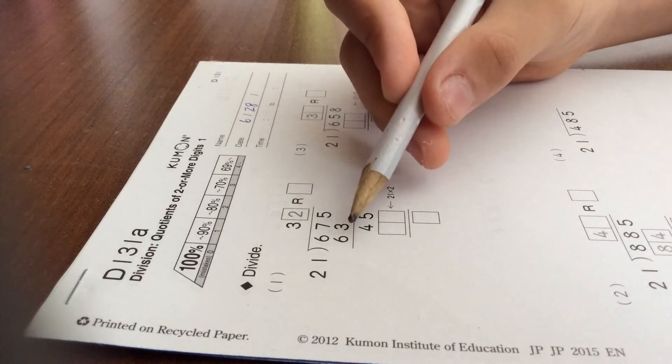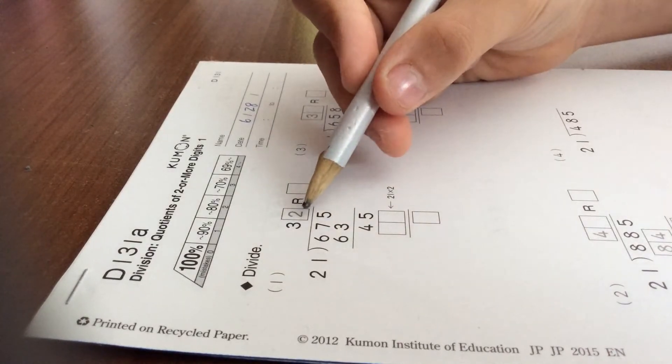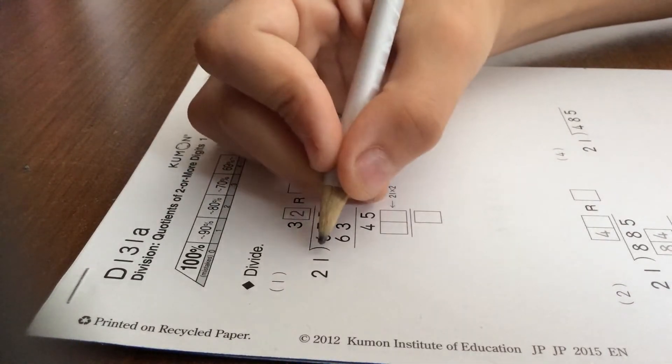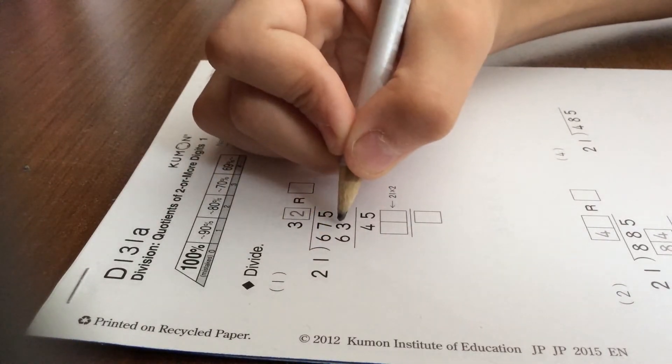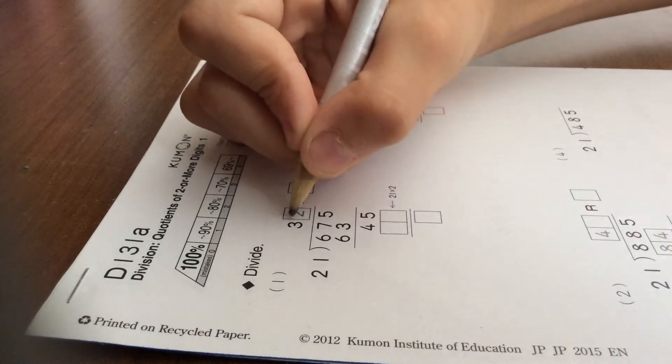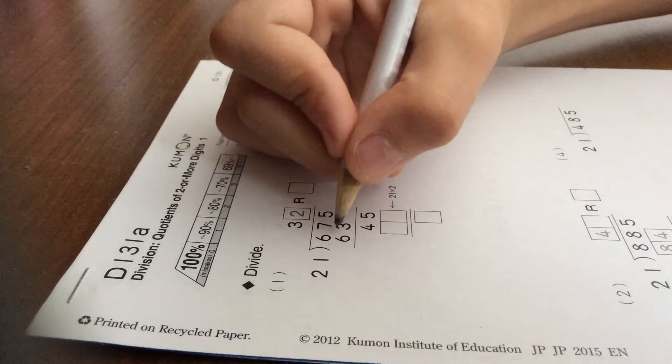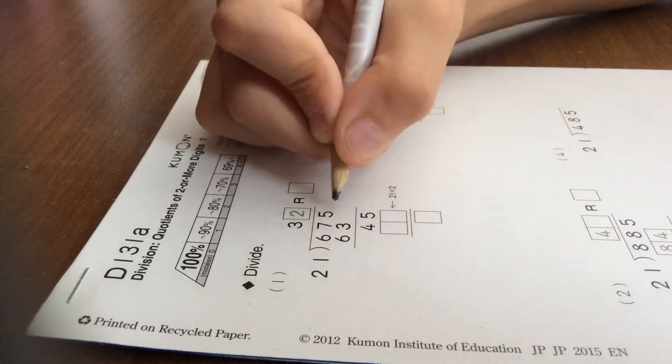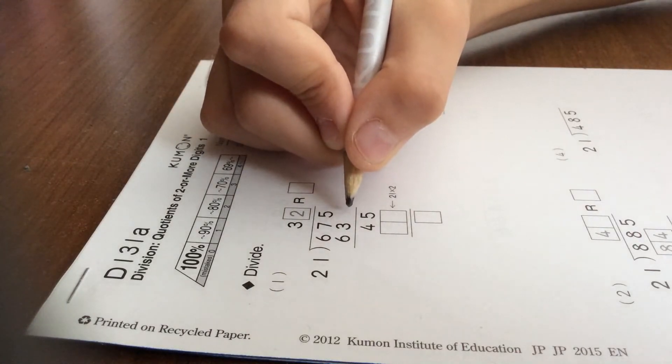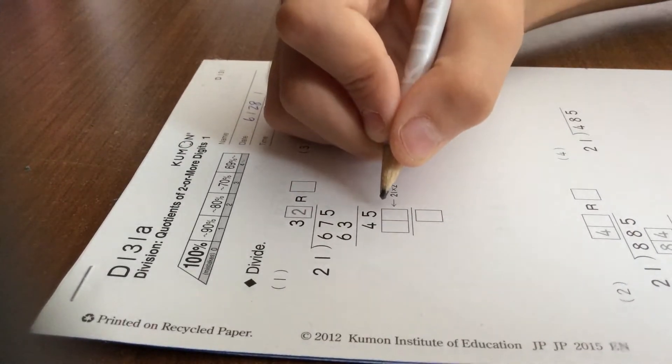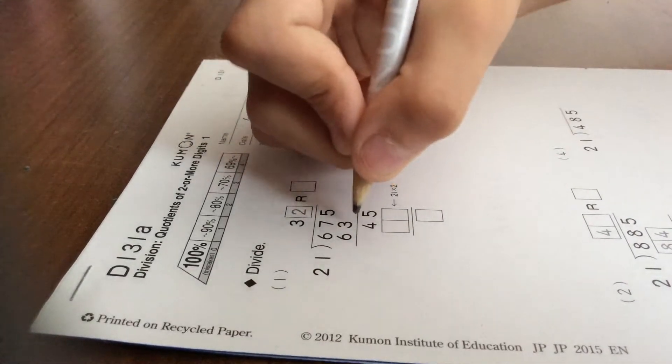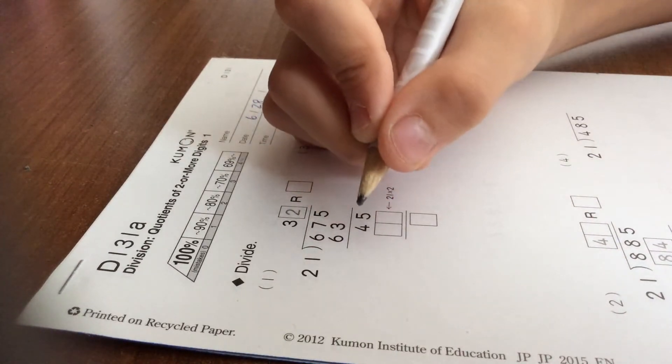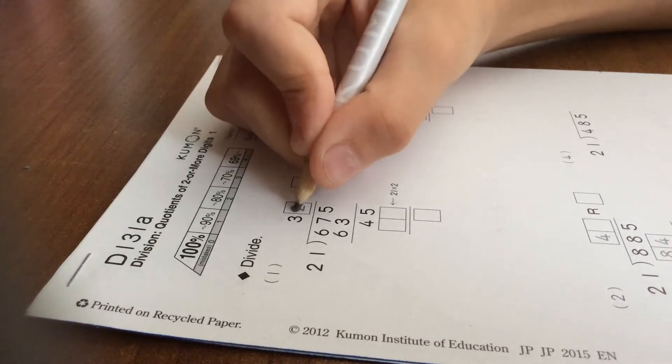Now you must figure out this. See, first 3 times 1 equals 3, right? This is 3. Now 3 and 2 equals 6, right? Now we're doing, now we minus 5 minus 0 equals 5, and then 7 minus 3 equals 4, and 6 minus 6 equals of course 0.